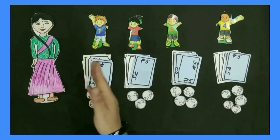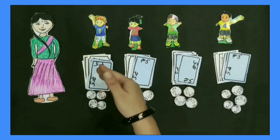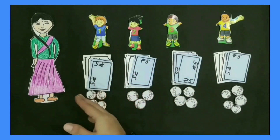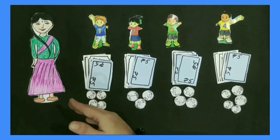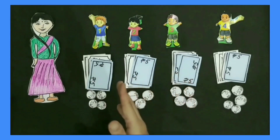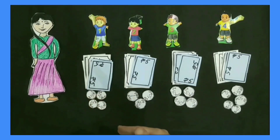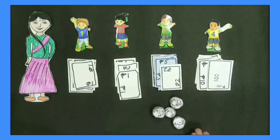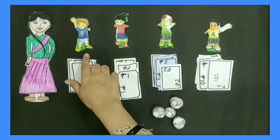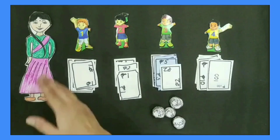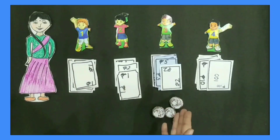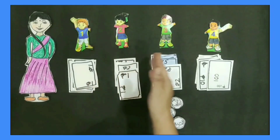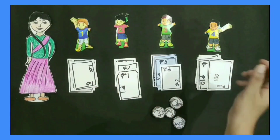Now the teacher told them to separate 2 rupee notes, 5 rupee notes, 10 rupee notes, and 100 rupee notes, and also count these different currency notes and coins. All the students separated the currency notes and coins. Then the teacher told Harman to become a cashier and put his heap of 50 paise coins on a table, while currency notes were distributed among the rest of the children.